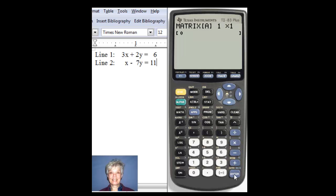Now, I'm going to define a 2 by 3 matrix because I have two equations here and I have three columns. The x column, the y column, and the constant column.